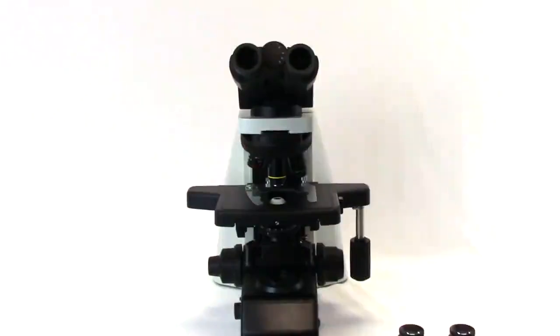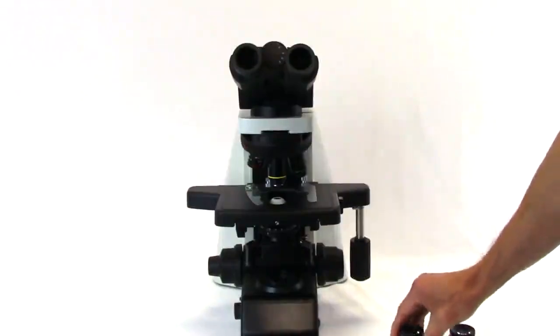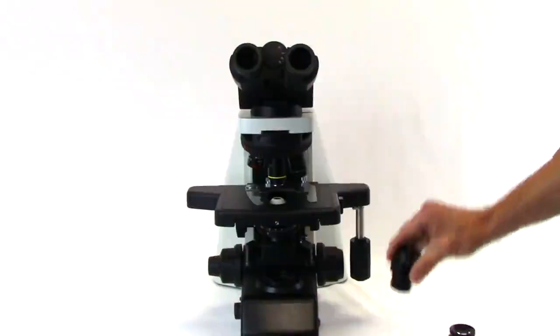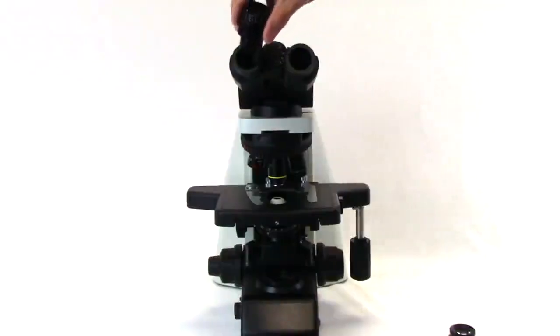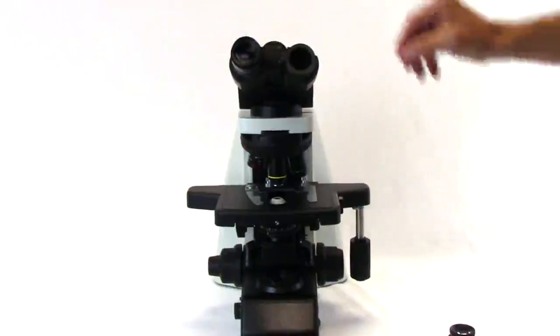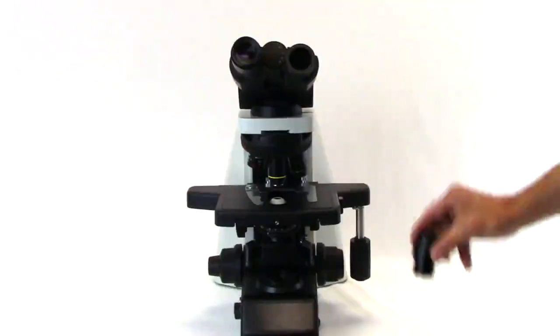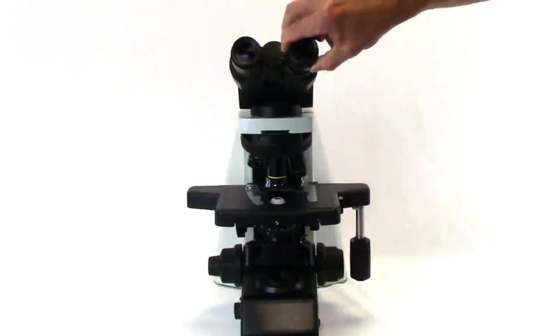Remove the dust caps from the eyepiece tubes. Insert an eyepiece into one of the eyepiece tubes. A gentle twist and push may aid in this process. Be sure the eyepiece is flush with the top surface of the eyepiece tube. Repeat for the other eyepiece.